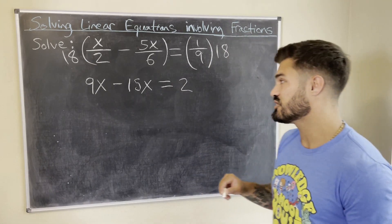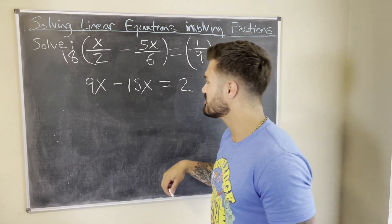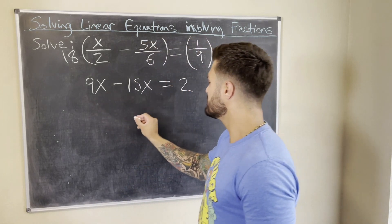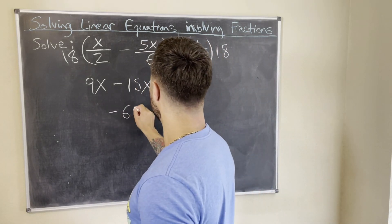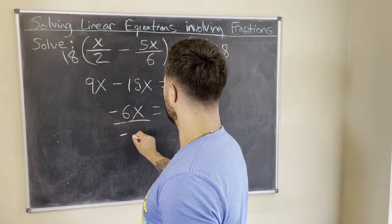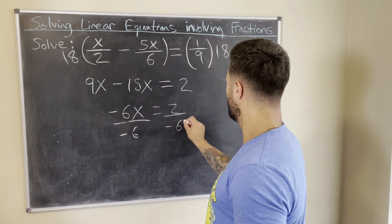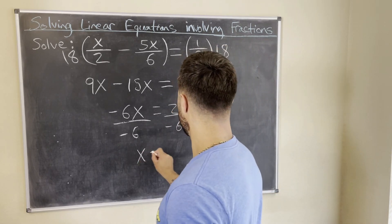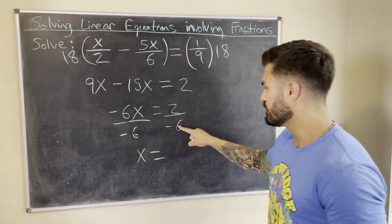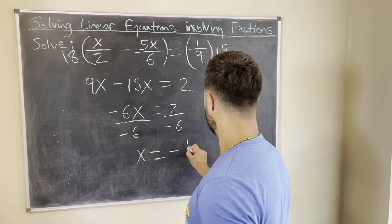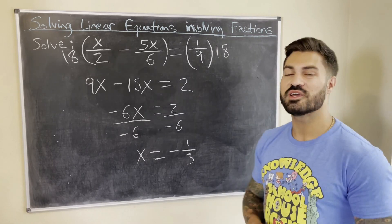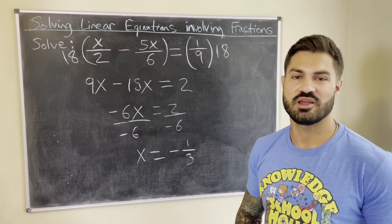Now we have a linear equation. Combining like terms on the left: 9 minus 15 gives negative 6x equals 2. Dividing both sides by negative 6, we get x equals 2 over 6, which reduces to negative one-third. That's our solution.